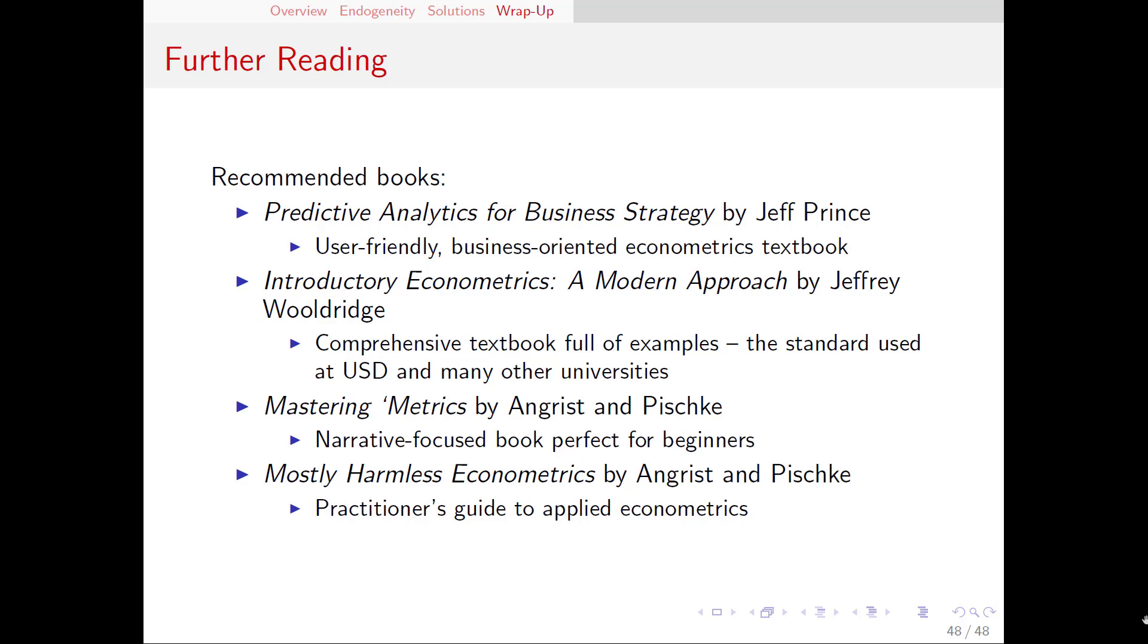These first two books are both extensive textbooks, whereas the other two books here by Angrist and Pischke are shorter, more narrative focused books. Mastering Metrics is a great book for beginners getting started with thinking about regression and causality. And then Mostly Harmless Econometrics is their other more advanced book that is a great practitioner's guide to doing applied econometrics.